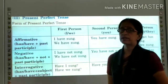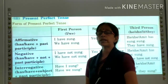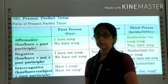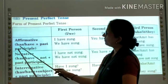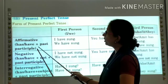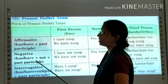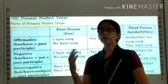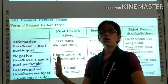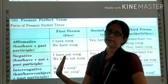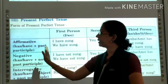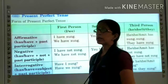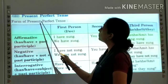We did Present Progressive Tense, in which we were using the ING form — the first form of the verb. Here with the helping verb have or has, we are going to use the past participle. Past participle means we can call it the third form of the verb. The third form of the verb is called past participle.